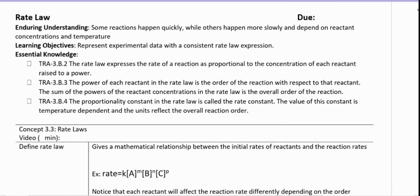We want to be able to write the rate law for any reaction. The enduring understanding is that some reactions happen quickly while others happen more slowly and depend on concentrations and temperatures. Our learning objective is to represent experimental data with a consistent rate law expression.